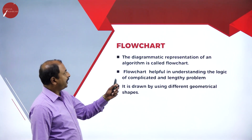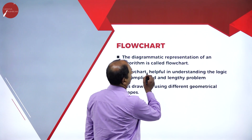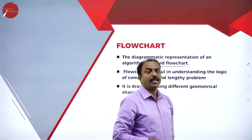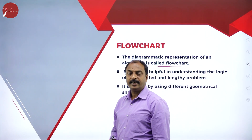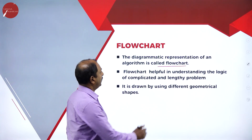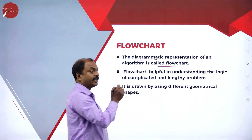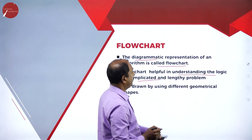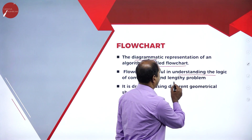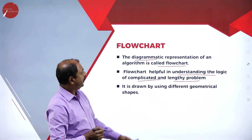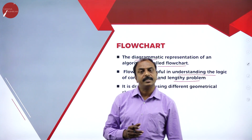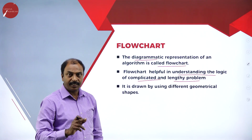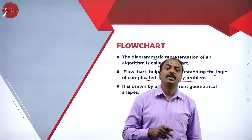A flowchart is a diagrammatic representation of an algorithm. Both algorithm and flowchart are two tools used to design a solution to a problem. A flowchart is a diagrammatic representation whereas an algorithm is a textual representation. Flowchart is helpful in understanding the logic of complicated and lengthy problems, making it easy to grasp the logic — unlike an algorithm which is only textual.